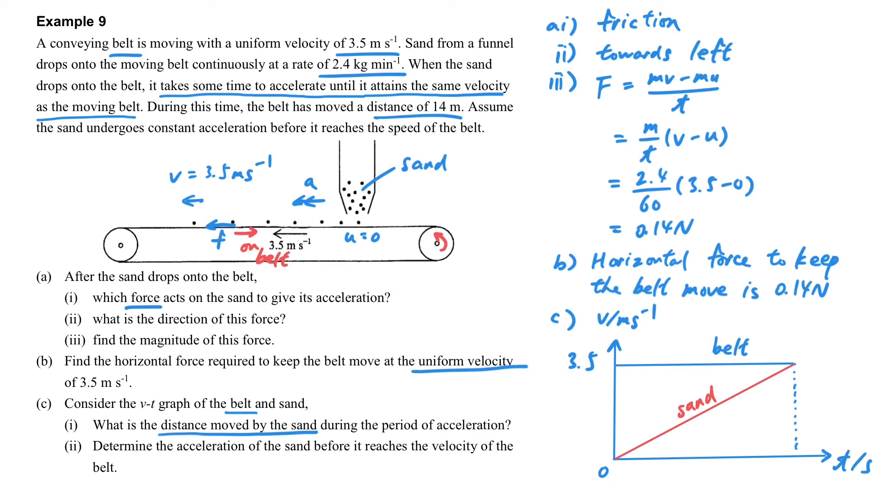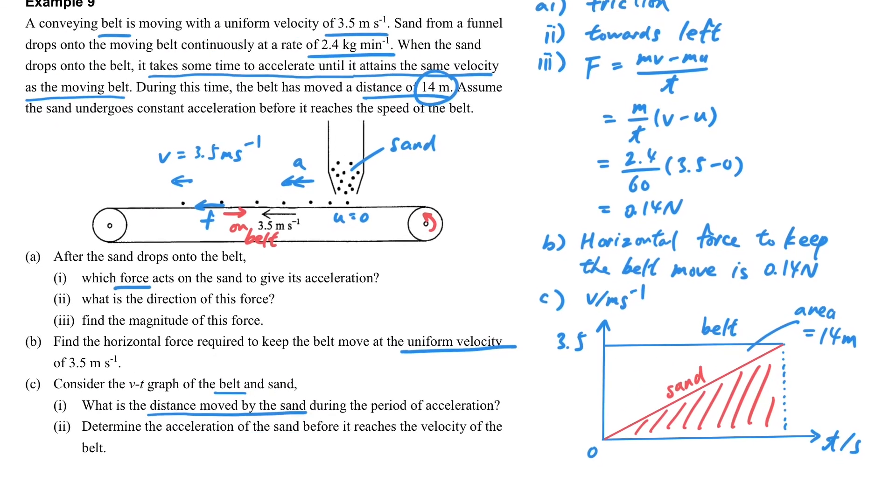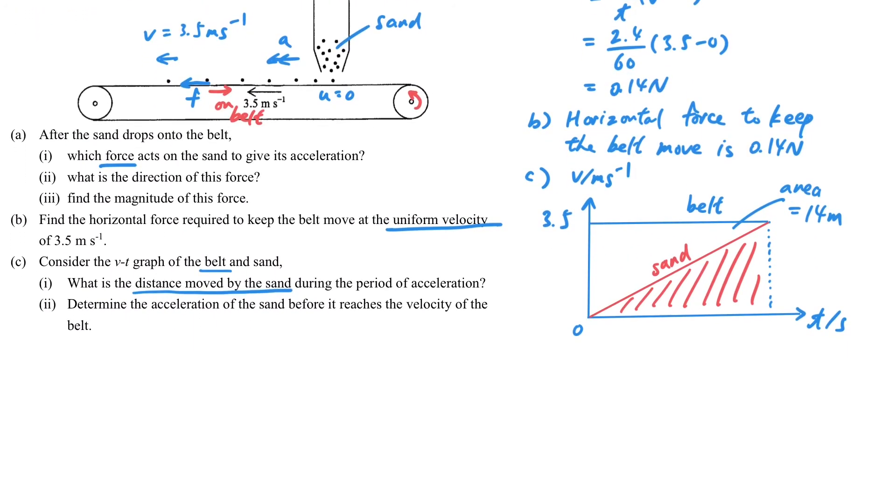What's the distance moved by the sand in order to attain that speed? Which is the red area as shown here. The question tells us that the belt has moved 40 meters. So we know that the area for the belt is 14. So the area of the sand is just half of the area for the belt. We can use this relationship to find the distance moved by the sand in order to reach 3.5 meter per second.